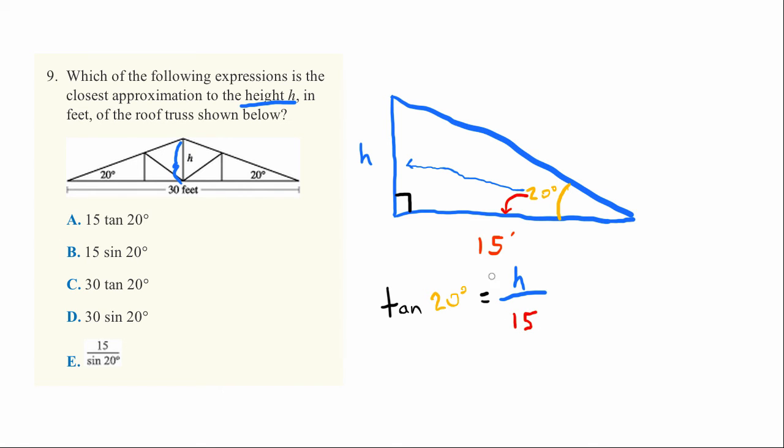All right, now we have this formula. Now it's a simple matter of correcting the formula to solve for the height. And what we get if we multiply both sides times 15 here is that 15 times the tangent of 20 degrees is equal to the height.